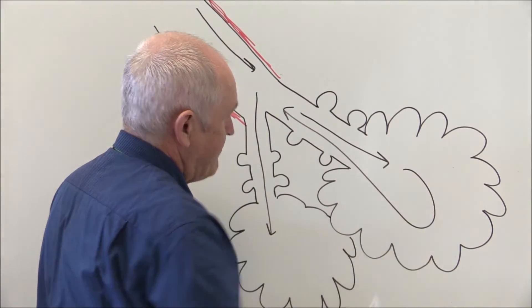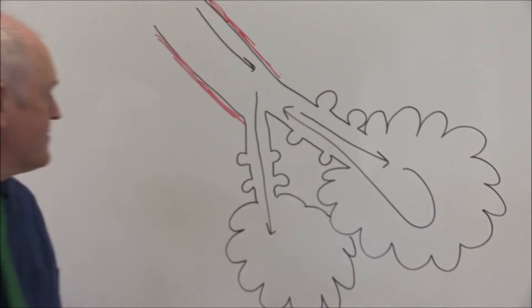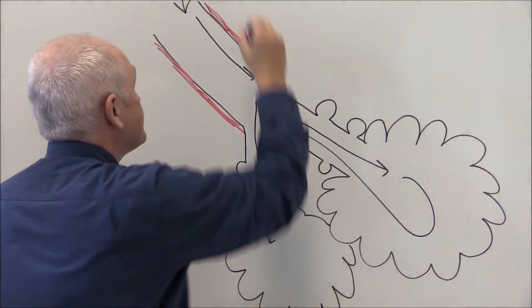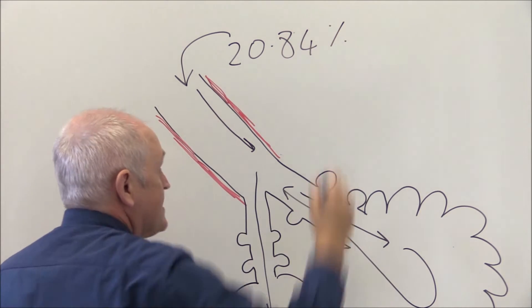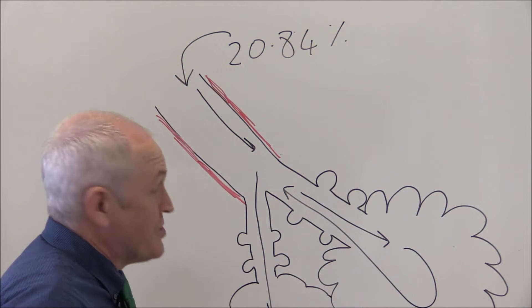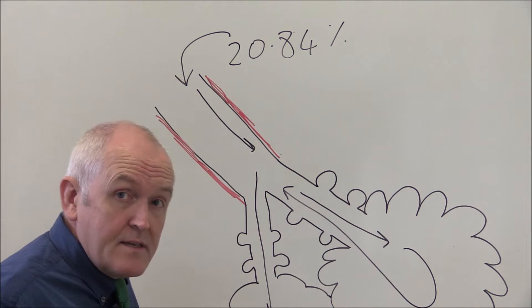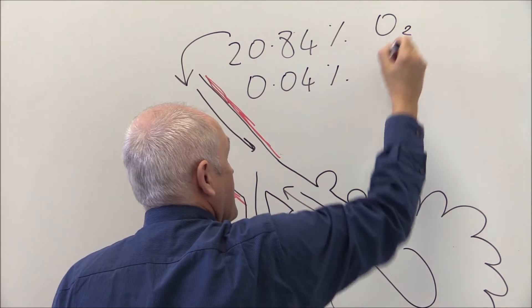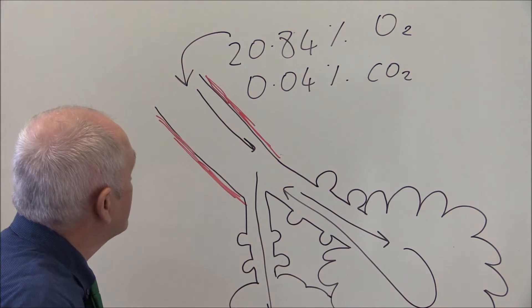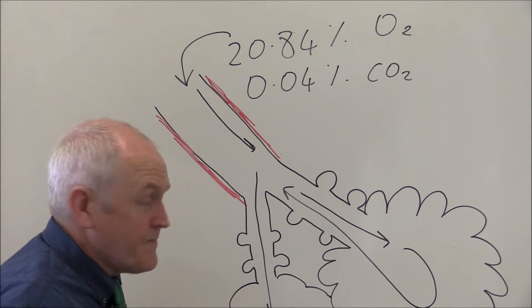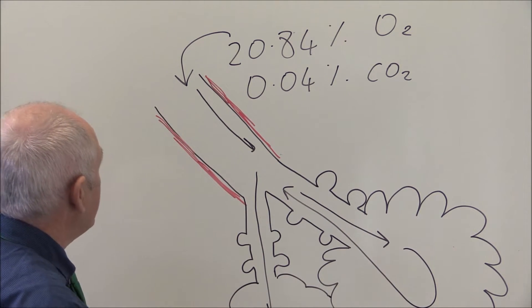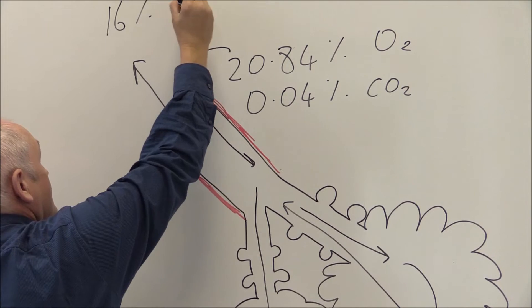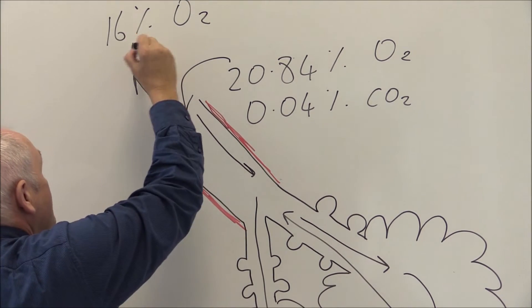The walls of the alveoli are very thin structures. The air going in is going to be relatively high in oxygen — about 20.84%, just under 21% oxygen in fresh air. The carbon dioxide in fresh air is going to be relatively low. But the air that we breathe out is going to be much lower in oxygen, maybe around 16%.